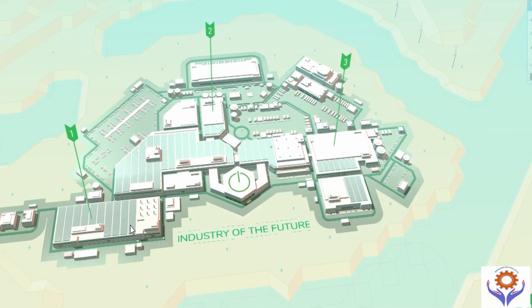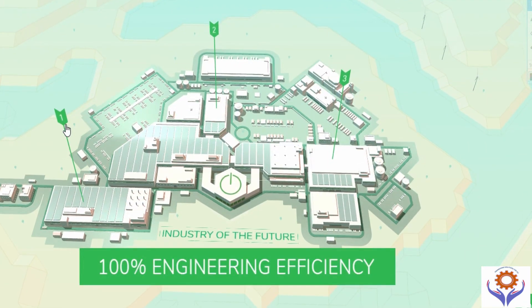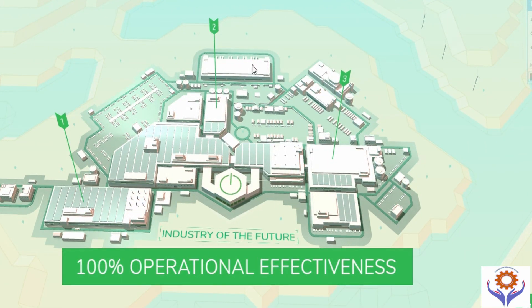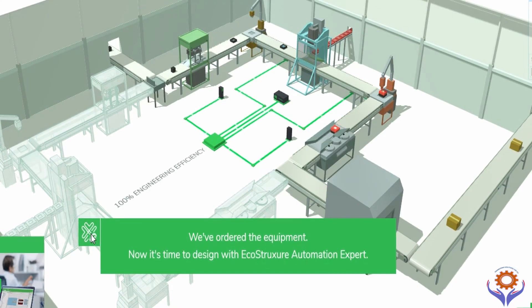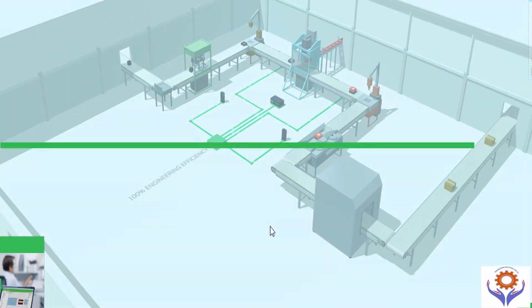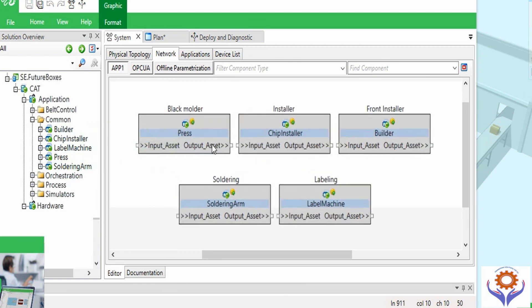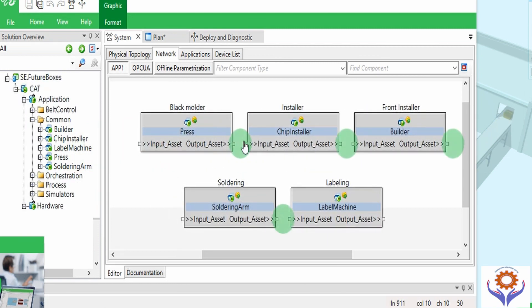First we will look at engineering efficiency. Once we order the equipment or products, it is time to design the engineering parts. In this application section we can select the process, which has many sections. Just drag and drop the main section and merge the line between two sections — they will connect automatically to each other.